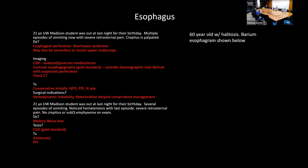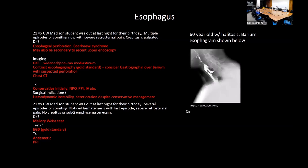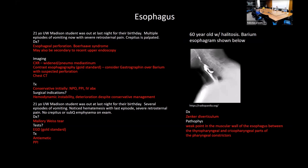A 60-year-old with halitosis and a classic barium esophagram appearance — that's Zenker's diverticulum. Pathophysiology involves dysfunction at the thyropharyngeal/cricopharyngeal junction of the pharyngeal constrictors, creating a false diverticulum (only mucosa herniates, not all wall layers). Meckel's diverticulum is the classic example of a true diverticulum. Treatment for symptomatic Zenker's: myotomy, either endoscopic or open.